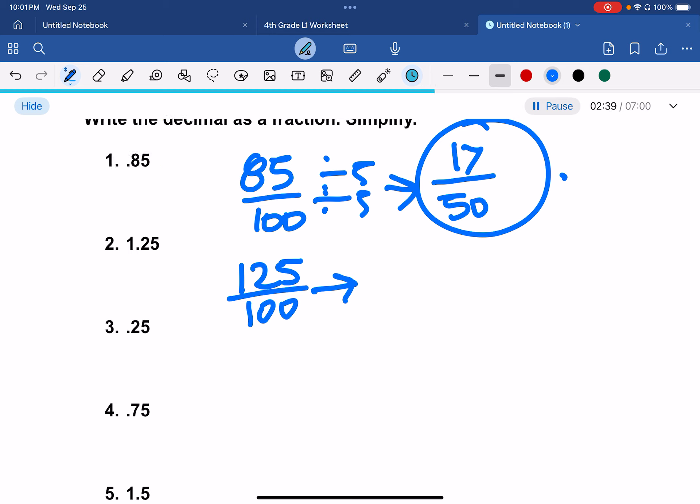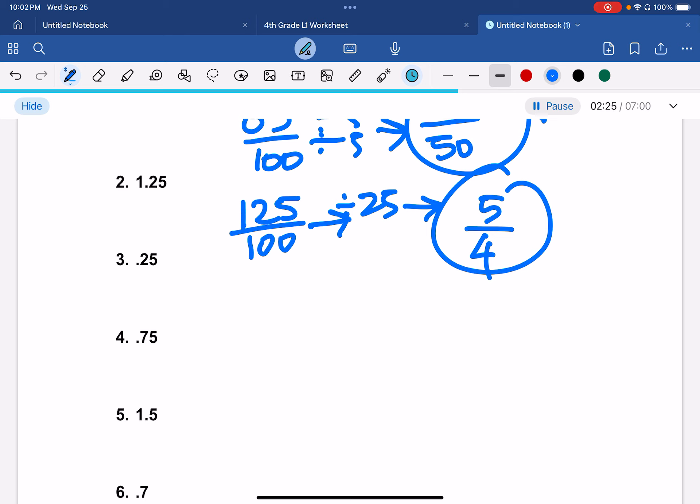And then 125 over 100, we can divide by 25, which would give us 5 over 4.